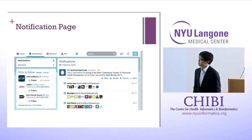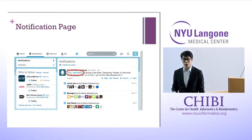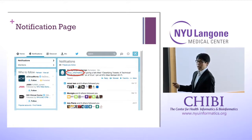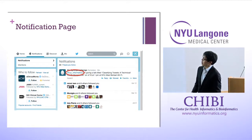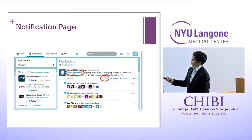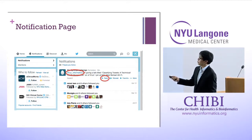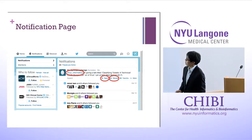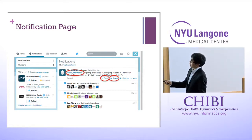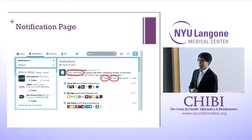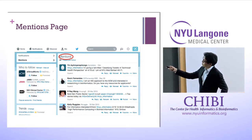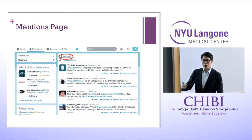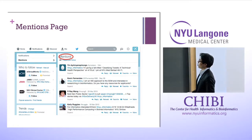There is a notification page where you can have direct conversations with a user by putting the at-symbol in front of their name. Yesterday from my account I sent a tweet saying I was giving this talk. You can reply to this tweet or retweet it. Mentions: any time anyone on the entire platform puts the at-symbol with your name in it, you can see a list of all the mentions — people talking to you or about you.